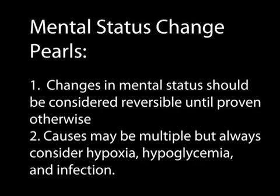Some common causes of altered mental status in older adults are dementia, urinary tract infection, blood sugar changes, and stroke. It can be a whole gamut of things, and oftentimes it's something fairly bland like a urinary tract infection. But we need to rule out the most severe things first. Remember: changes in mental status should be considered reversible until proven otherwise, and always consider hypoxia, hypoglycemia, and infection.